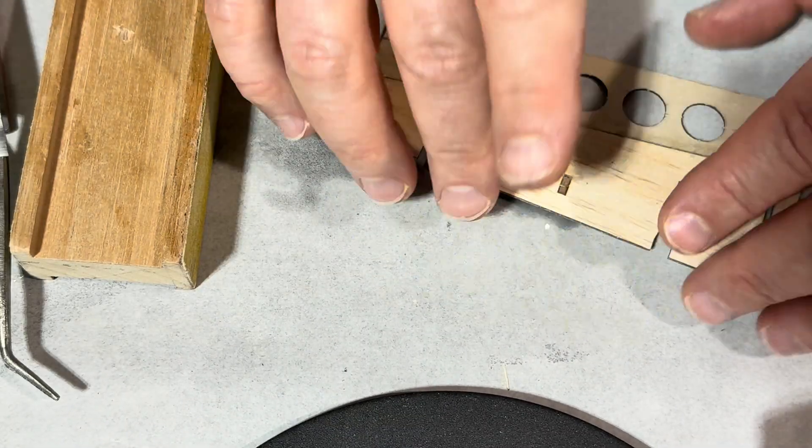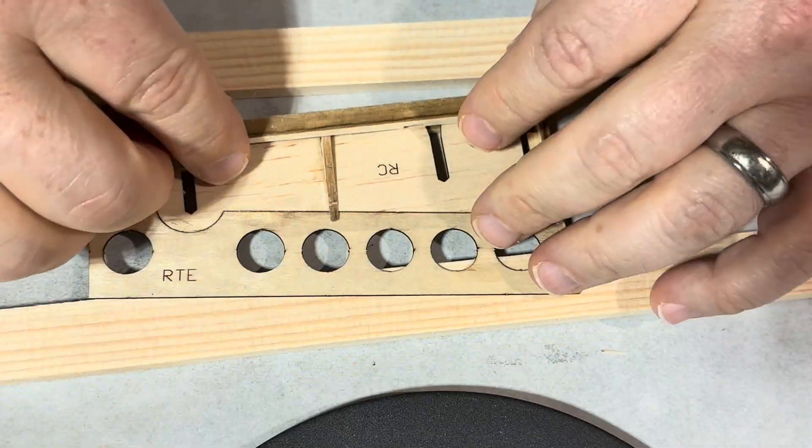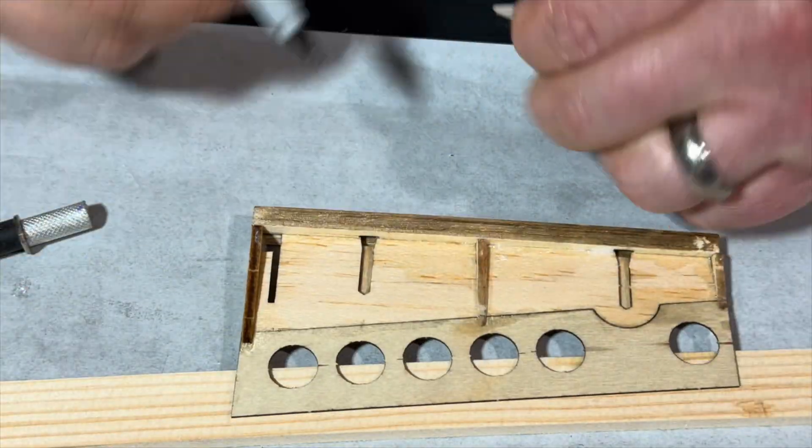That is the plywood edge, plywood trailing edge you're seeing here with all the holes. Adding the ribs, leading edge.